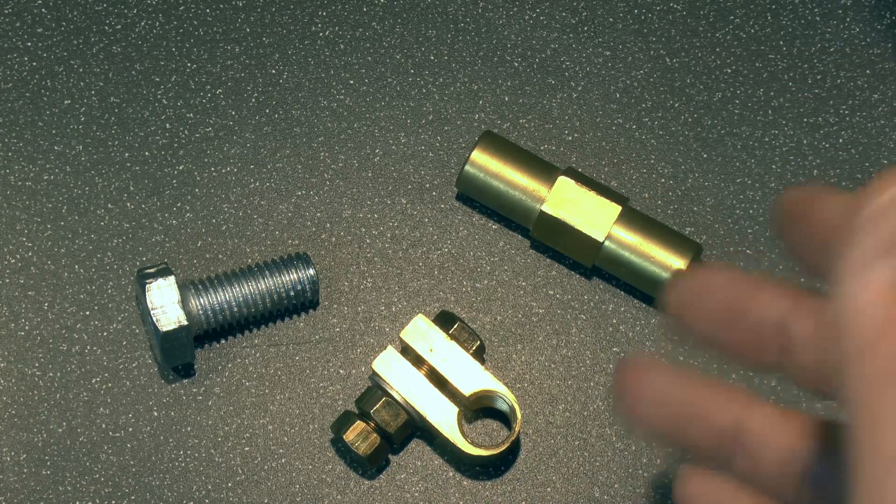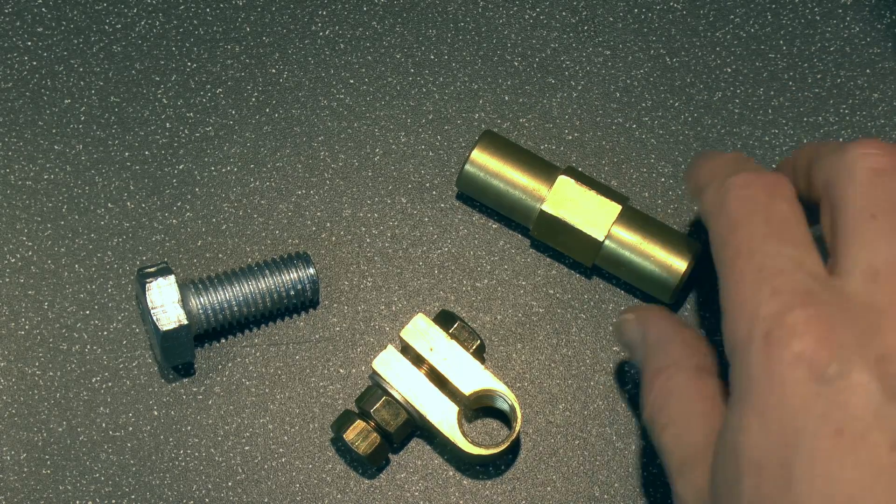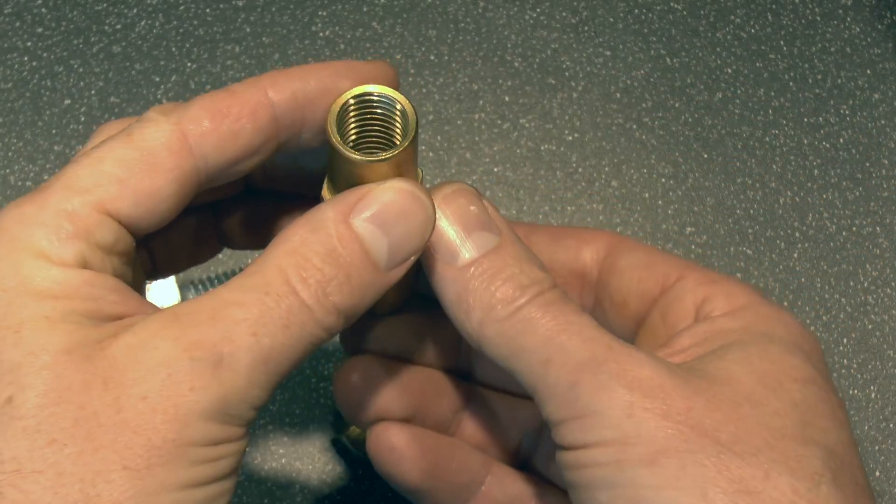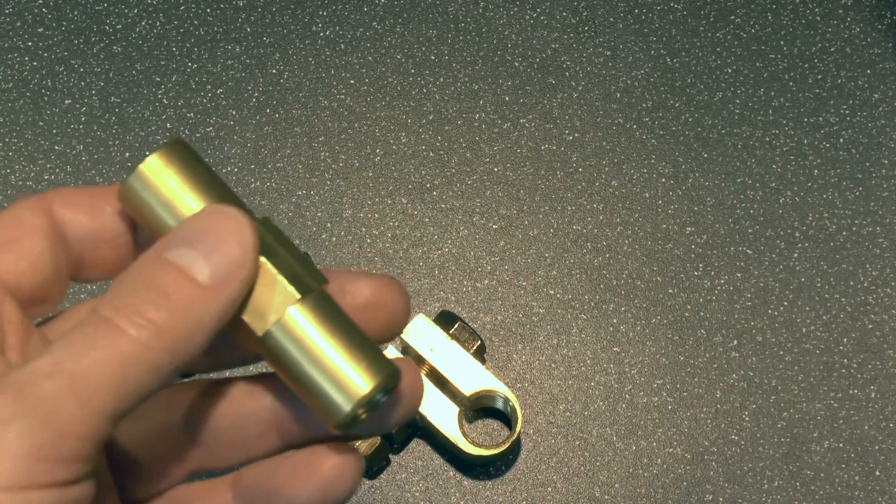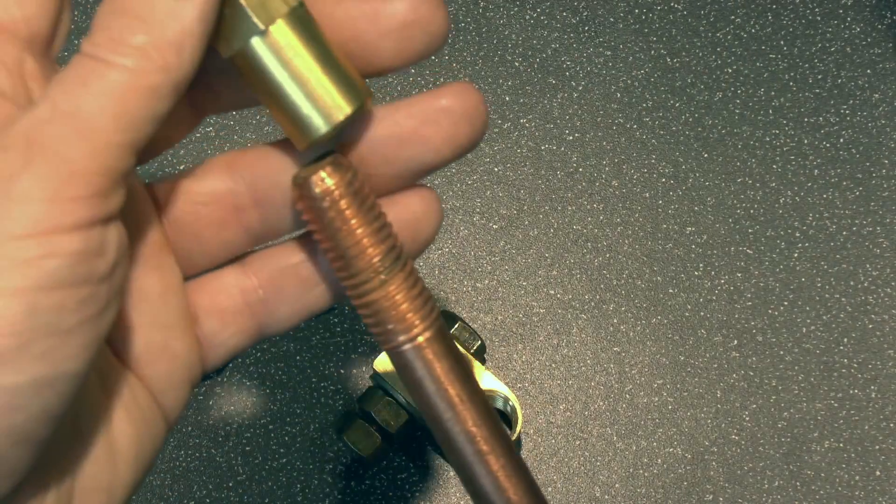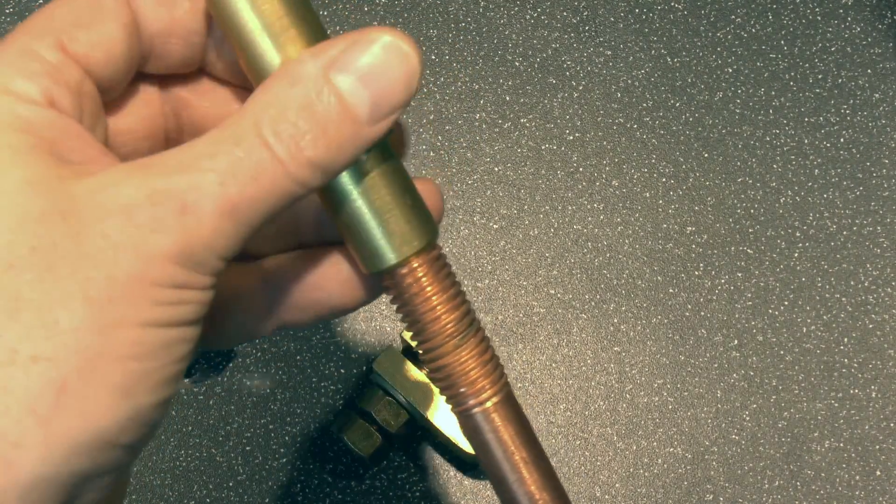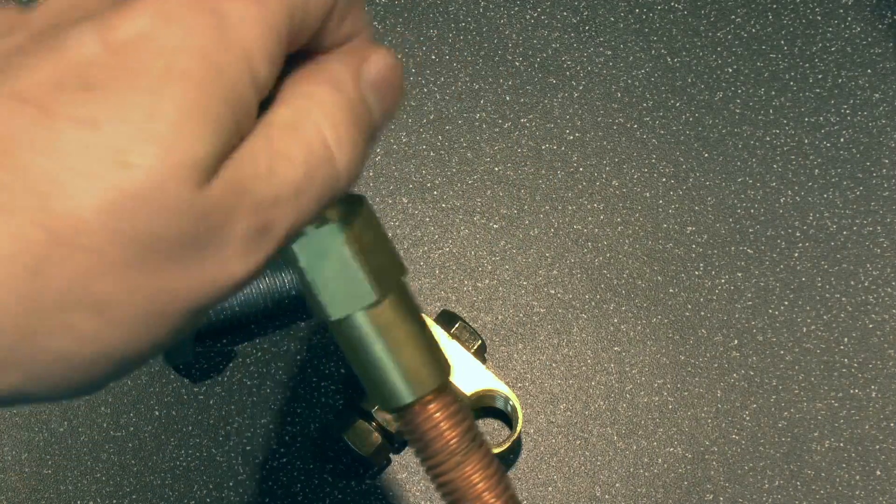Now as well as the rod itself there's a few other components that you'll need. The first one is this coupler here, this is brass threaded on the inside. The idea is that you can go on to the end of the rod, so you can just put it over the thread here, and then that will just thread on like that.